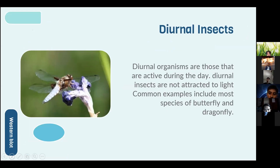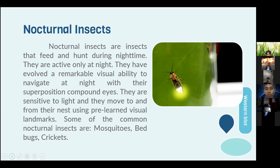Diurnal insects are those that are active during the day and are not attracted to light. Common examples include most species of butterflies and dragonflies. Nocturnal insects feed and hunt during the night and are active only at night. They have a remarkable visual ability to navigate at night using their superposition compound eyes. They are sensitive to light and move to and from their nest using pre-learned visual landmarks. Common nocturnal insects include mosquitoes, bed bugs, and crickets.